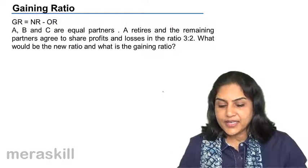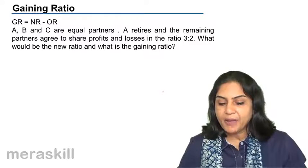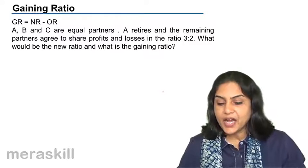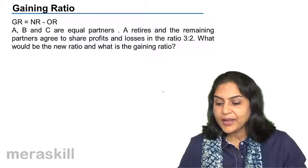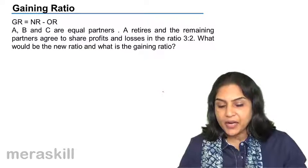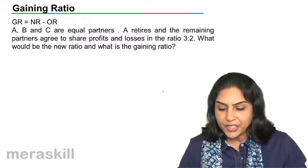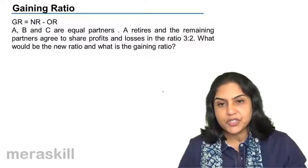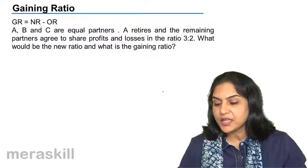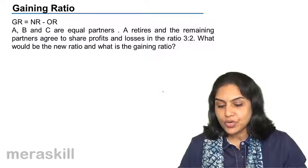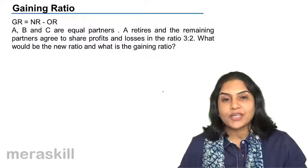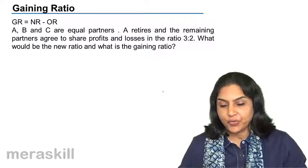Let us take an example. A, B and C are equal partners. A retires and the remaining partners agree to share profits and losses in the ratio 3 is to 2. What would be the new ratio and what is the gaining ratio?